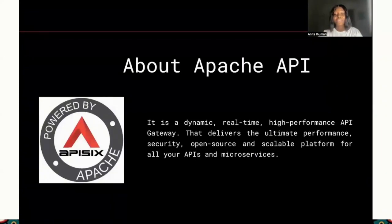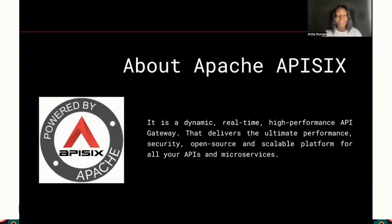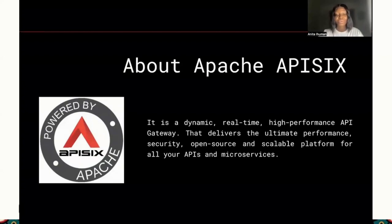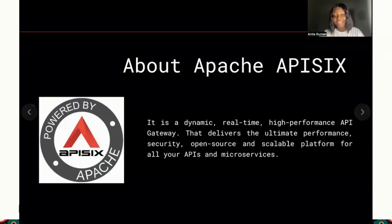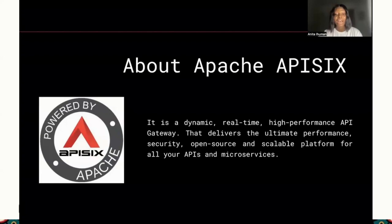Apache APISIX happens to be an API gateway. It is a successful open-source project under the Apache Foundation, and it offers dynamic, real-time, high-performance API gateway features. This tool was open-sourced in the year 2019, and since then it has gained a lot of attention from developers from different organizations. As of today, it records over 9,000 stars and over 300 contributors on GitHub. This API gateway lets you build cloud-native microservice API gateways, and delivers ultimate performance, security, and a scalable platform for your APIs as well as microservices.